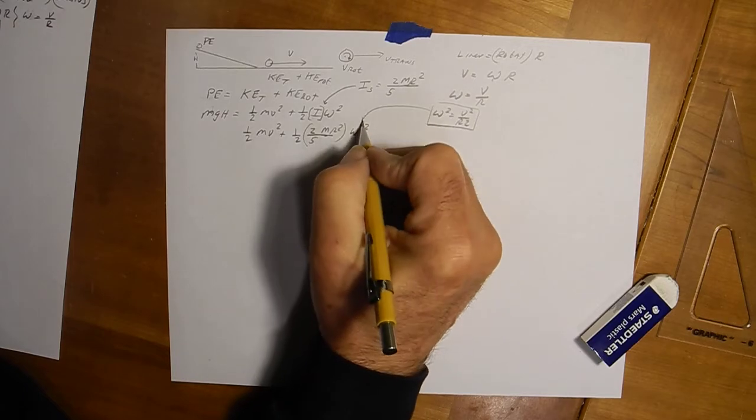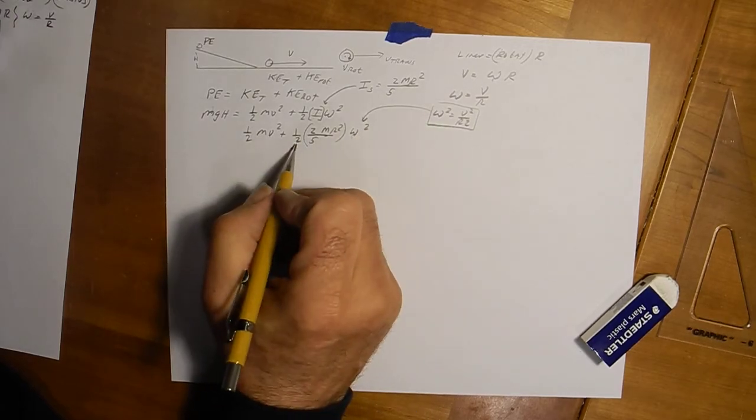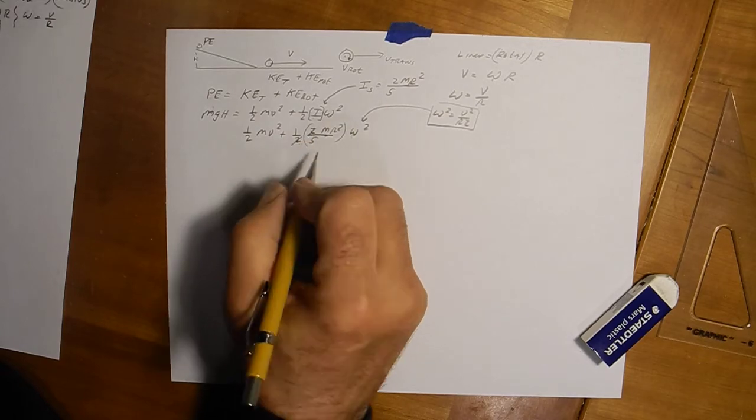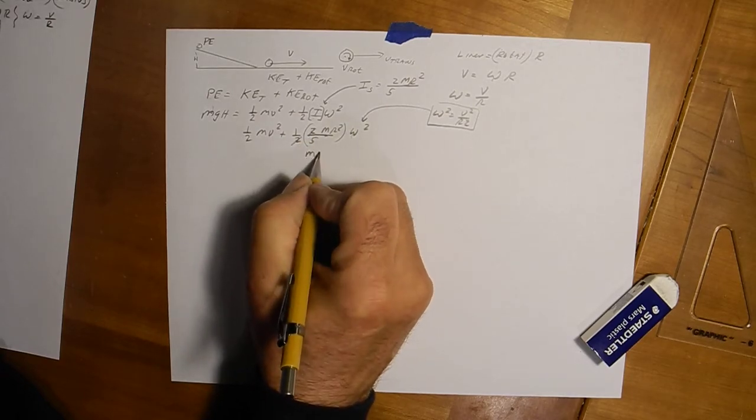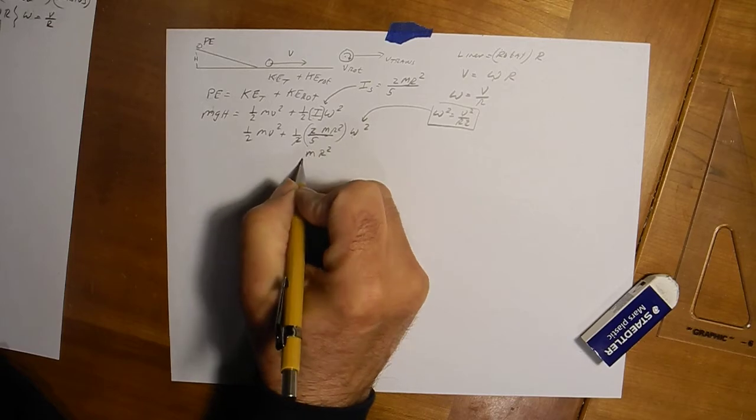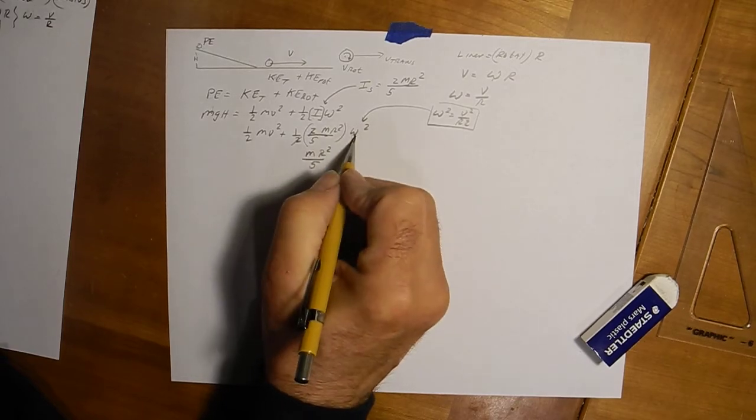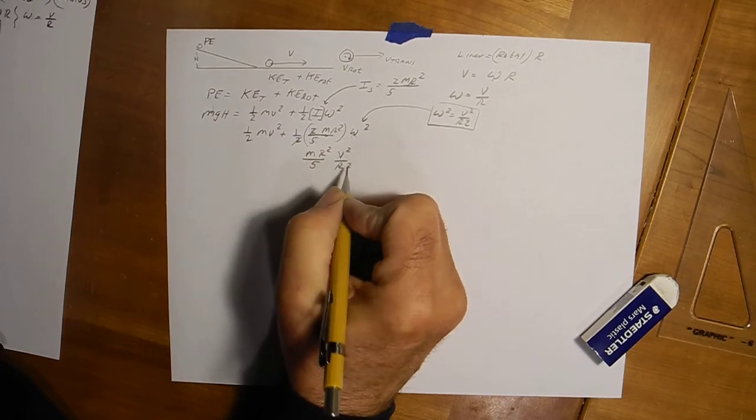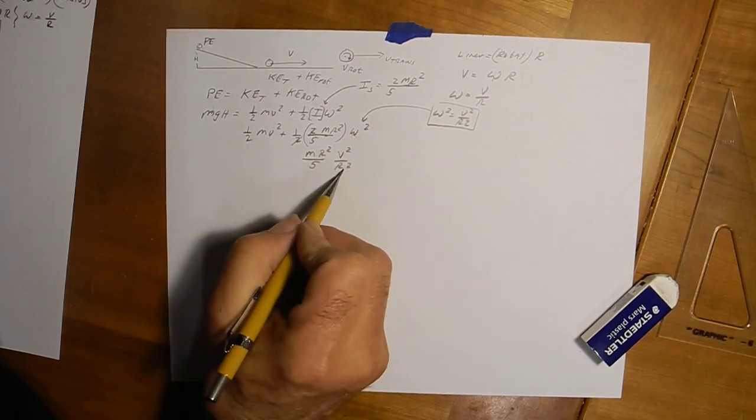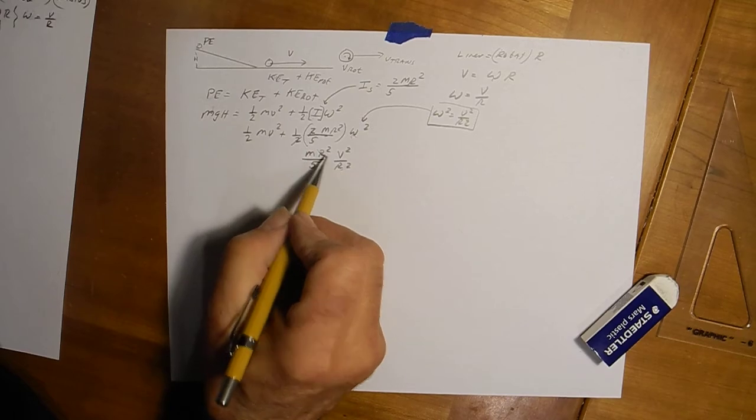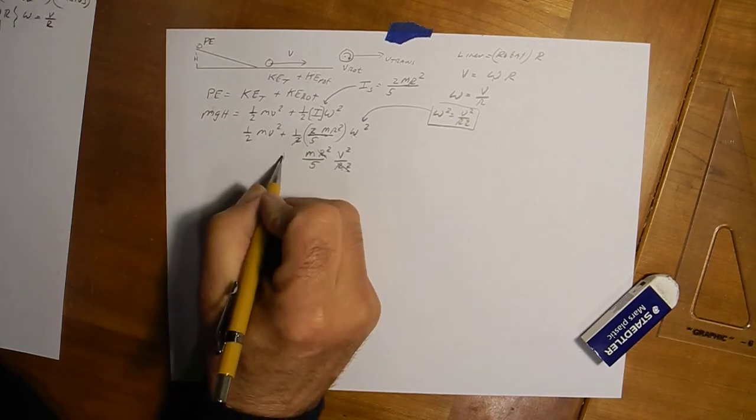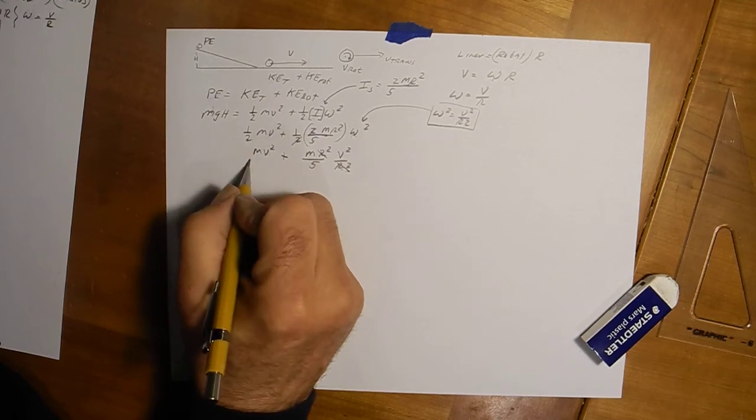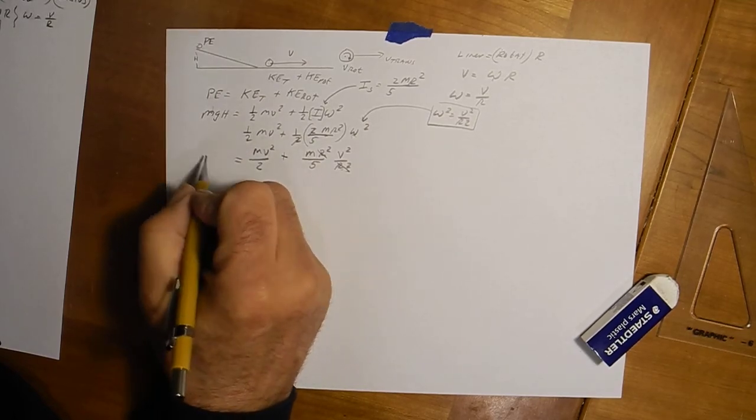Let's make that substitution right there. So maybe I'll let these twos cancel each other right now, so that gives me mr squared over five, and for omega squared have v squared over r squared. Look what happens to r: r squared on top, r squared on the bottom, gone, boom! Coming down is mv squared over two, I'll just write that as v squared over two equals mgh.